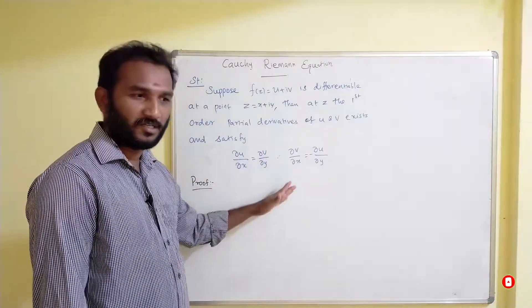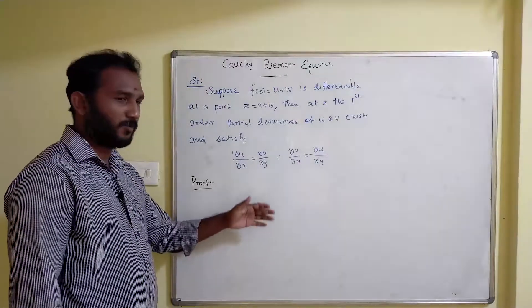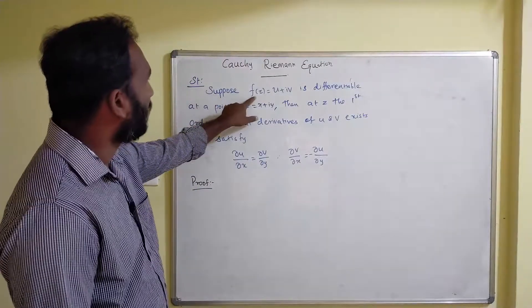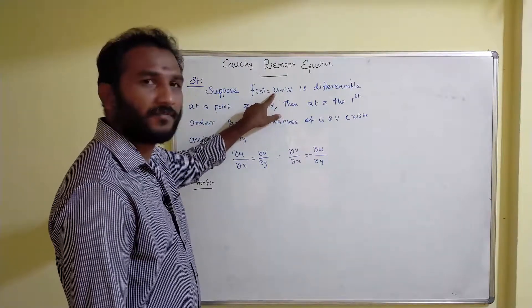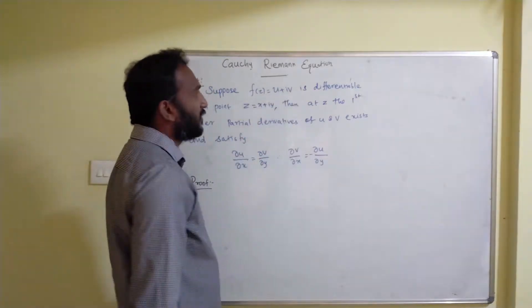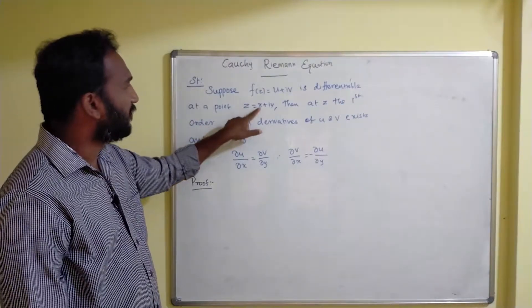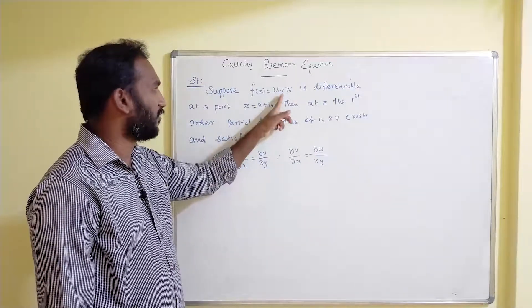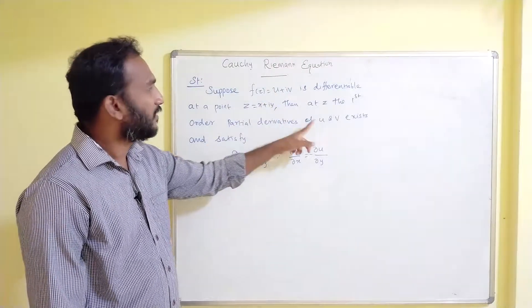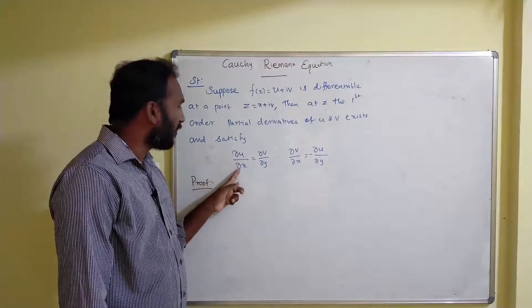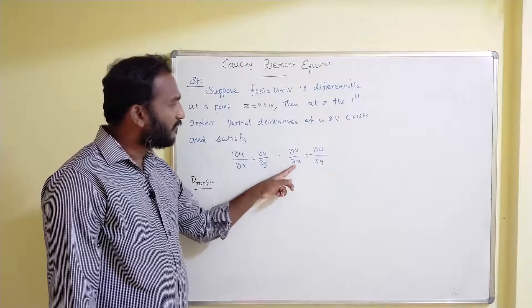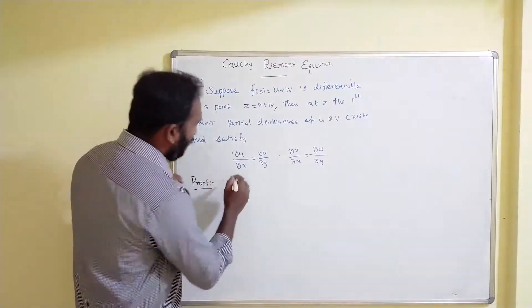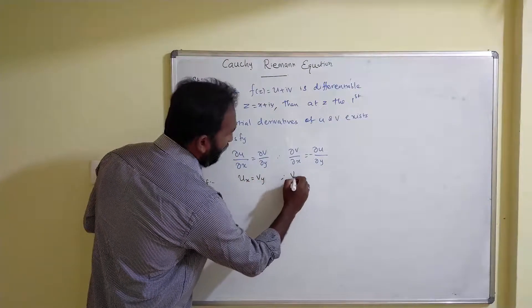We will first discuss the Cartesian coordinate and then go to the polar coordinates. The statement is: suppose f(z) = u + iv, that is u(x+iy) + i·v(x+iy), is differentiable at a point z = x + iy. Then at z, the first order partial derivatives of u and v exist and satisfy: ∂u/∂x = ∂v/∂y, and ∂v/∂x = -∂u/∂y, or in notation: u_x = v_y and v_x = -u_y.